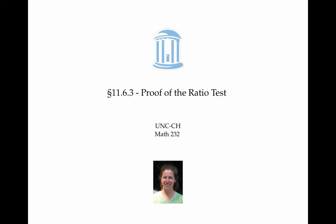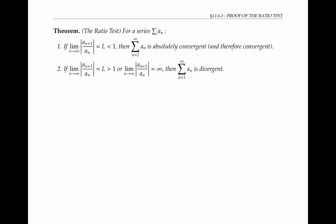In this video, I'll prove the ratio test for convergence and divergence of series. The ratio test says that for a series, if the limit of the absolute value of the ratio of consecutive terms is equal to a number L that's less than one, then the series is absolutely convergent and therefore convergent.